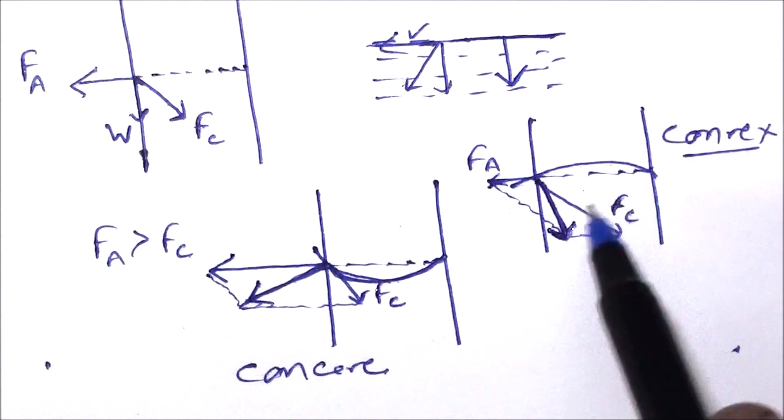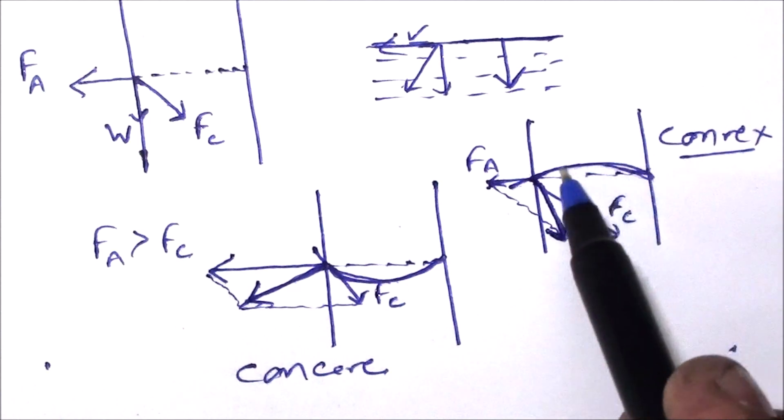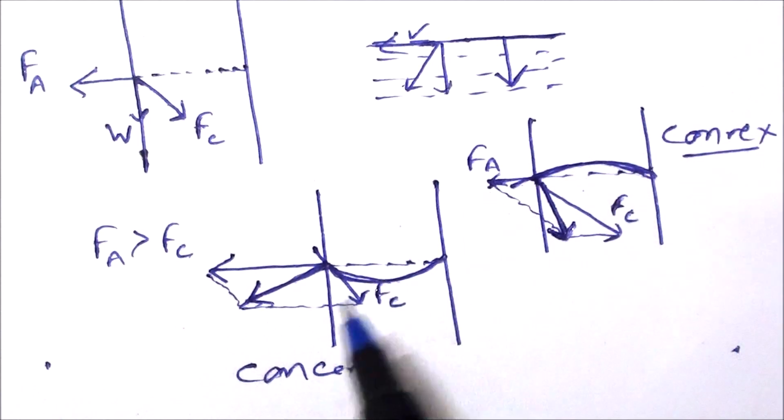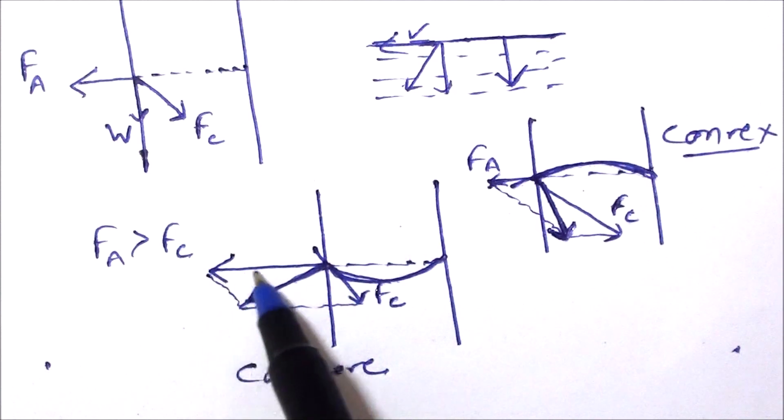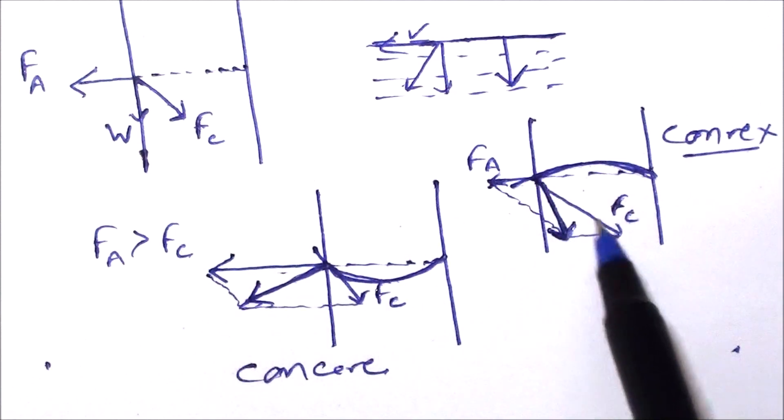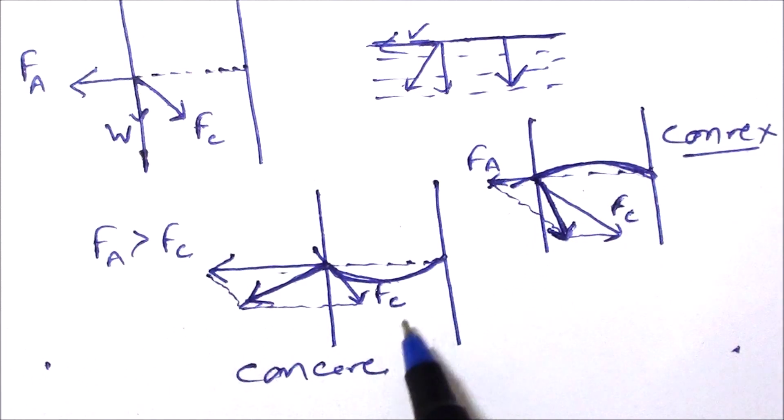These liquids for which the meniscus is convex don't wet the solid surface. These liquids wet the solid surface because here the adhesive forces are stronger. Here the cohesive forces are stronger. This is the case for glass and mercury, while this is for water and glass.